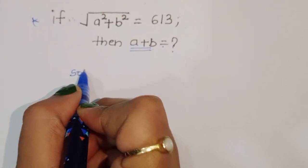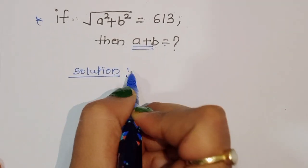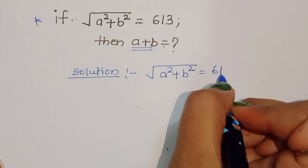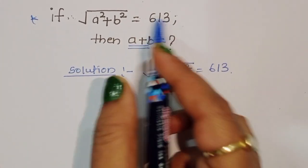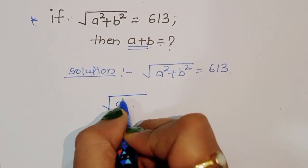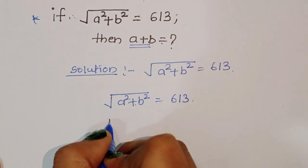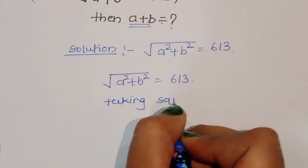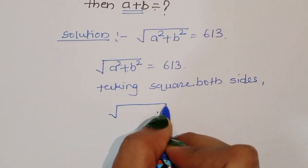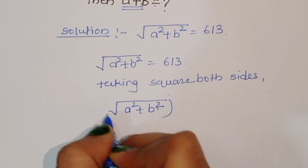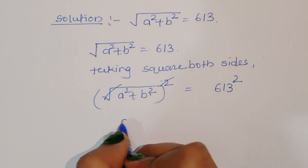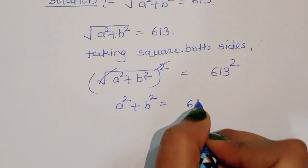Now let's see the solution. What is given? Square root of a squared plus b squared is equal to 613. There are many types of solutions, but we are doing this according to Pythagoras. So, a squared plus b squared is equal to 613. Taking squares of both sides, we get a squared plus b squared, whole square, is equal to 613 squared. This will cancel, giving us a squared plus b squared is equal to 613 squared.